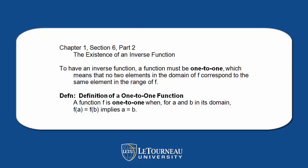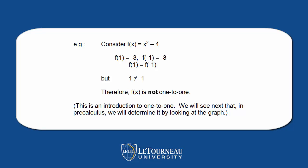What we want to look at here is the existence of an inverse function. For a function to have an inverse function, it must be one-to-one. Look at your definition. A function f is one-to-one when, for a and b in its domain, f(a) equals f(b) implies a equals b.